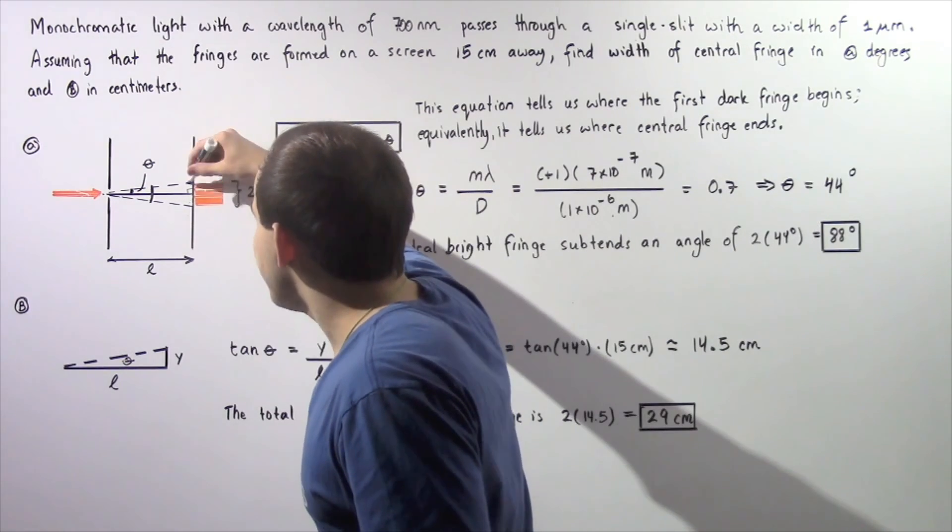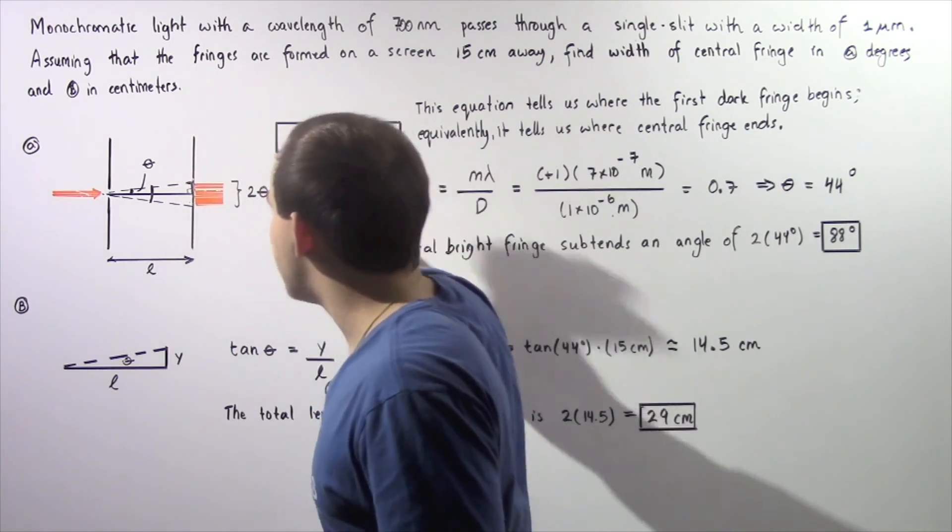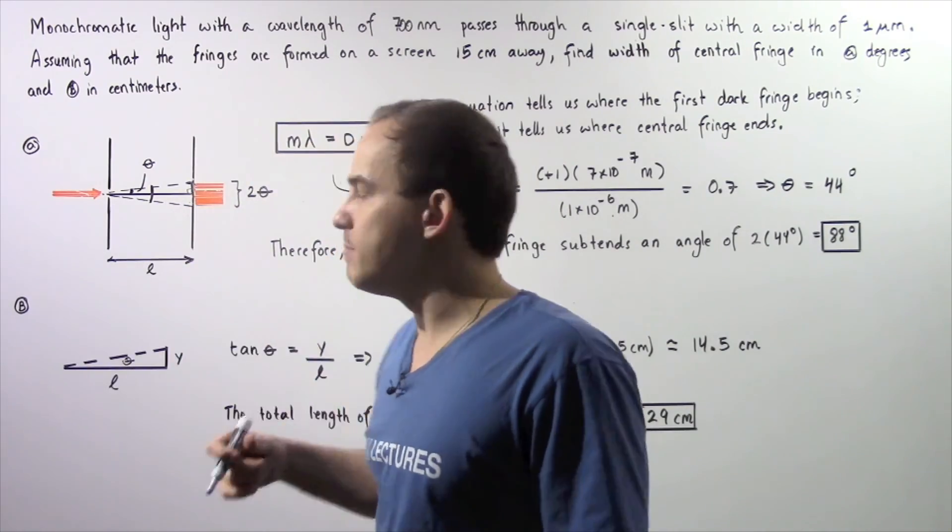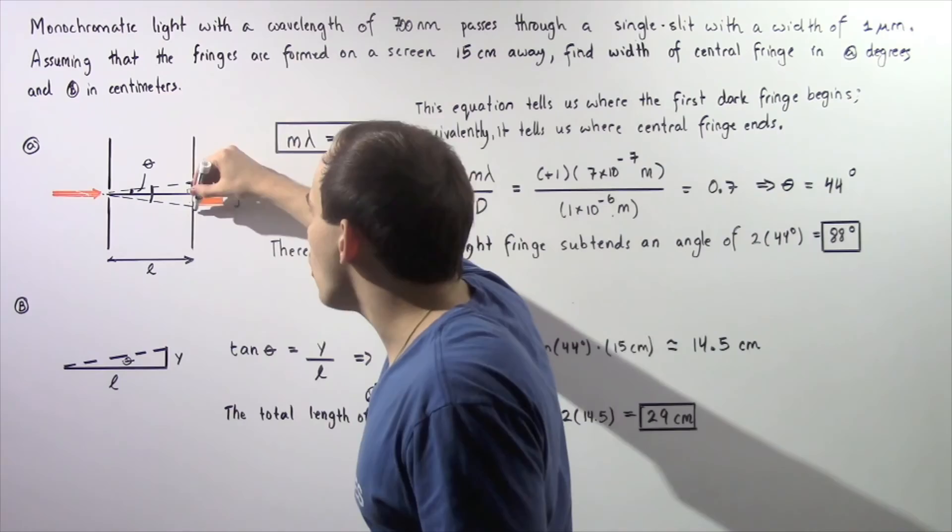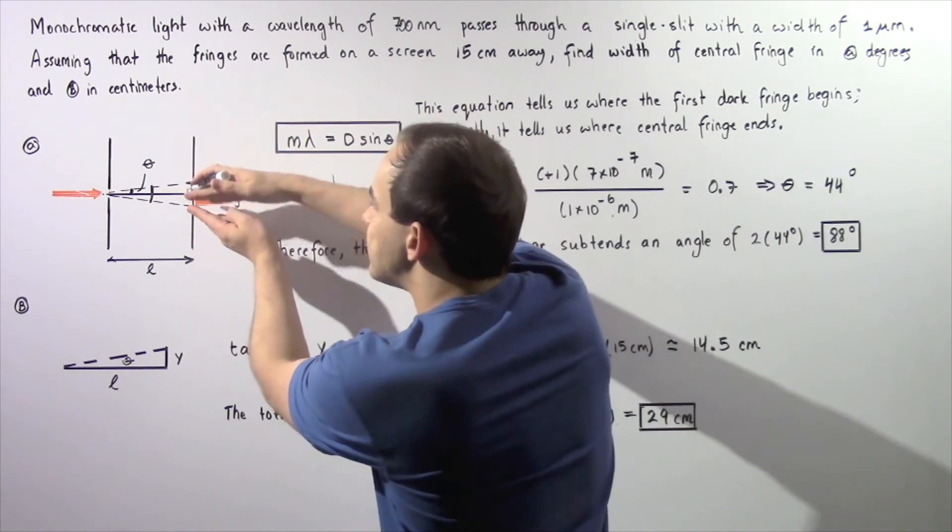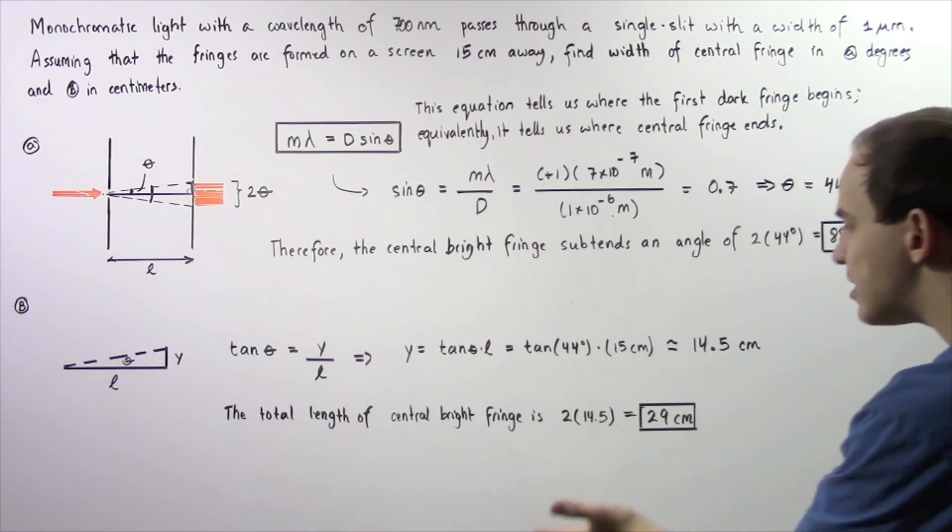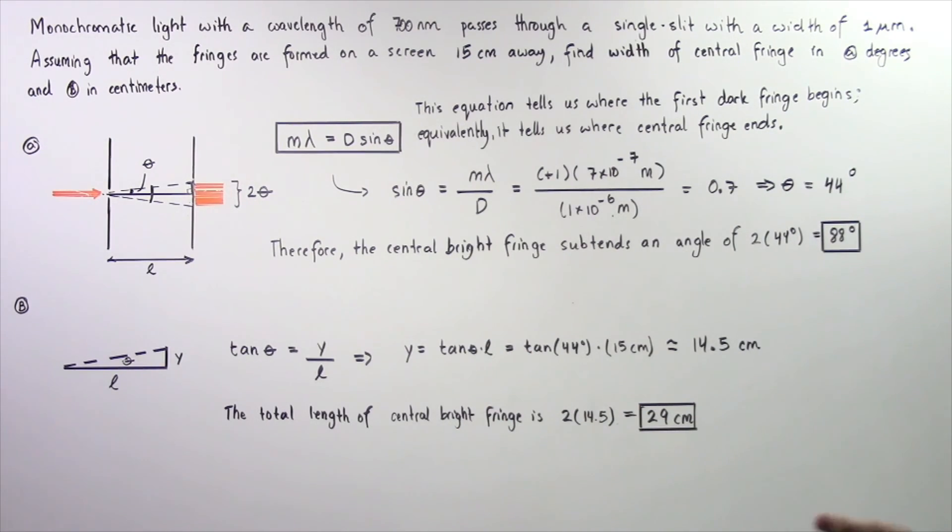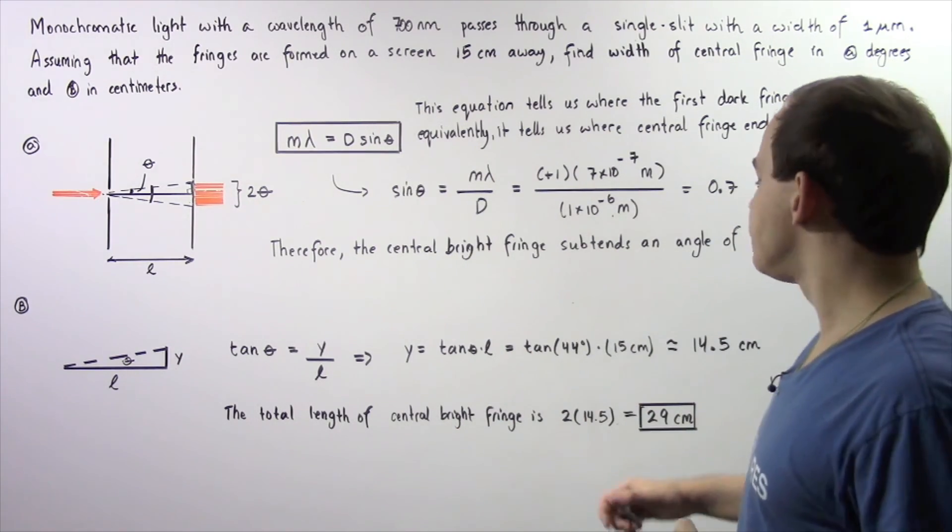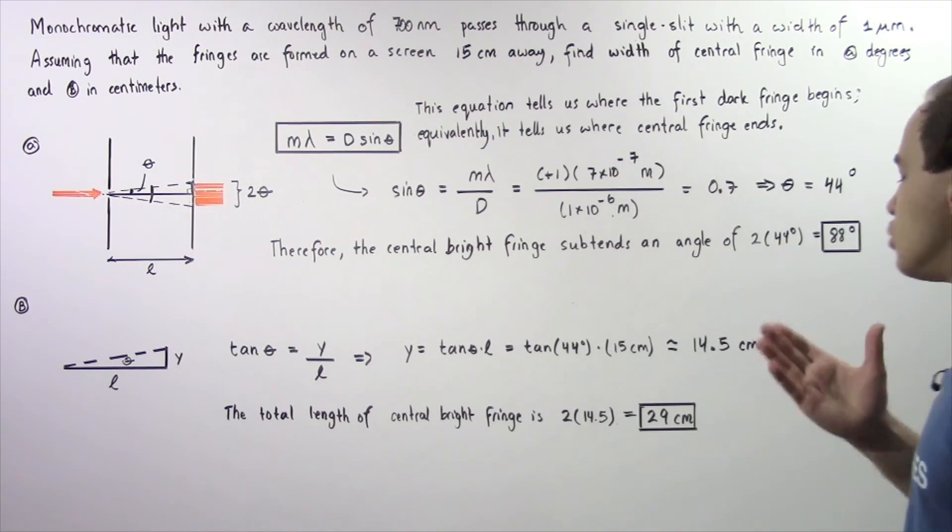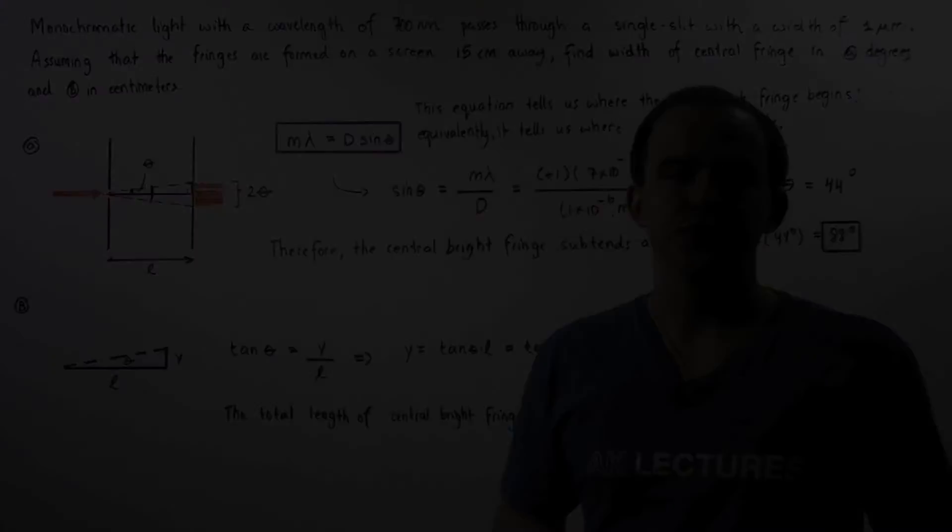So this distance is 14.5 centimeters. If we double that we get 29 centimeters which is the total distance that this central fringe essentially takes up. So the total length of the central fringe is 2 multiplied by 14.5 centimeters or equivalently 29 centimeters.